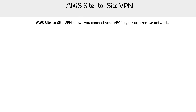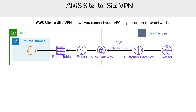Site-to-site VPN allows you to connect your VPC to your on-premise network. Here is an example of a site-to-site VPN — you might see some illustrations that look a little different, but more or less it is pretty much the same thing. Let's take a look at the components that are involved.